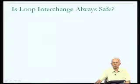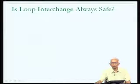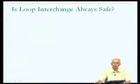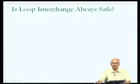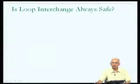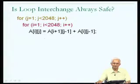Towards the end of the previous class, we asked: can you just arbitrarily interchange loops? Isn't that potentially going to change the meaning of the program? Let us look at an example where it is in fact going to change the meaning of the program. Here is a slightly more convoluted example.